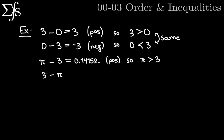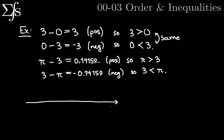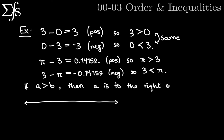Similarly, three minus pi is negative 0.14159..., so that's negative, and therefore three is less than pi. This should give you good intuition as to how numbers relate when they're less than or greater than. Visually, if A is greater than B, then A is to the right of B — that's the biggest visual insight. A is a larger value than B, so if A is bigger than B, A should be to the right of B on the horizontal real number line.